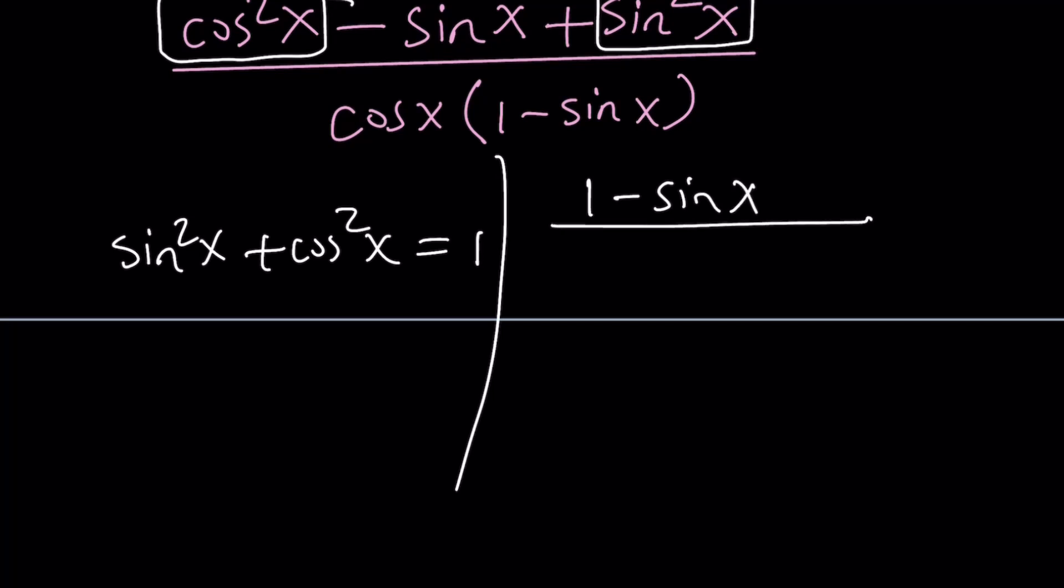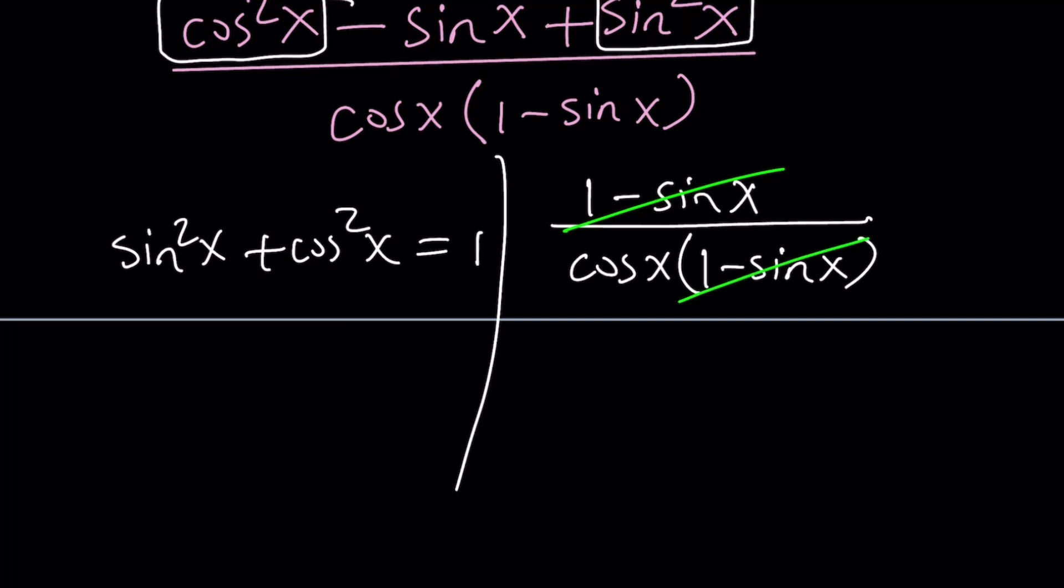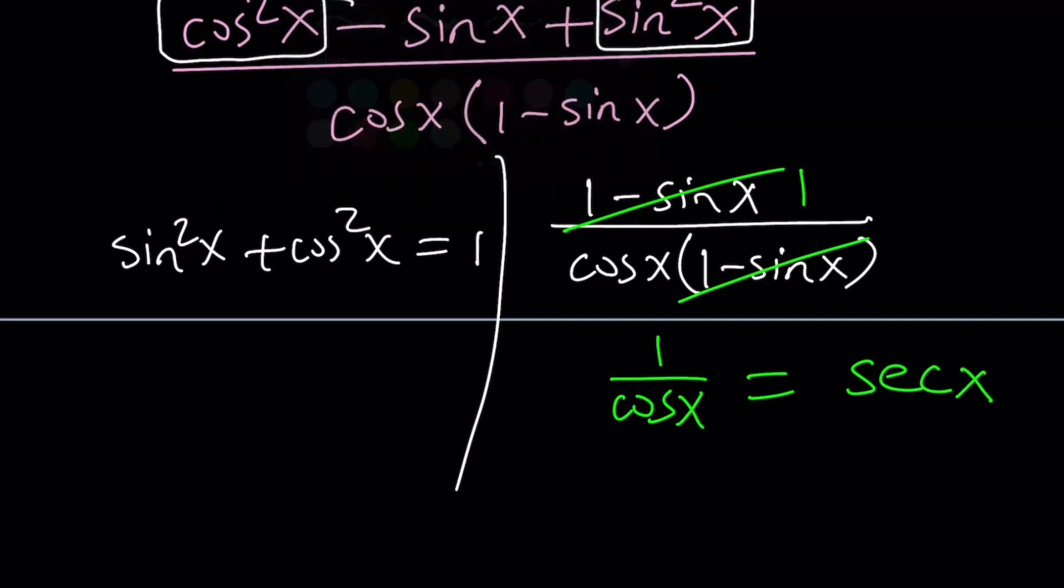And the rest becomes 1 minus sine x. And at the bottom I have cosine x. Again, do not distribute for these kinds of problems because it's better in the factored form. Now we have 1 minus sine x in the numerator and in the denominator, so we can simplify them. And that gives us 1 over cosine x, which is the same as secant x. And that's actually the same result that we got before.